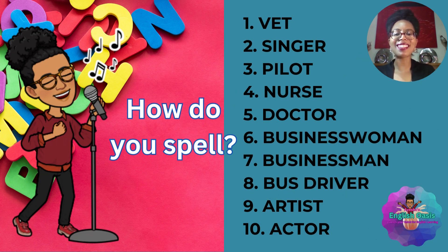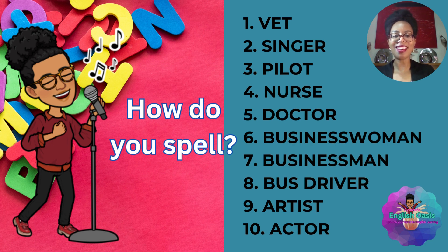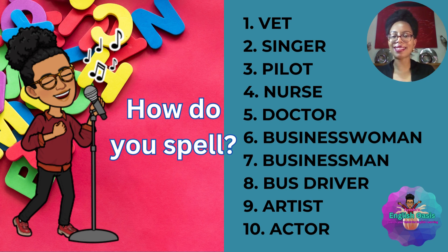Okay everybody, let's check your answers. How do you spell number one, vet? How do you spell number two, singer? S-I-N-G-E-R. How do you spell number three, pilot? P-I-L-O-T. How do you spell number four, nurse? N-U-R-S-E. How do you spell number five, doctor? D-O-C-T-O-R.